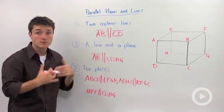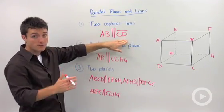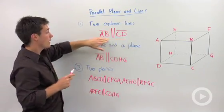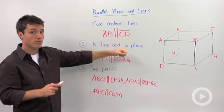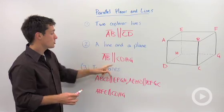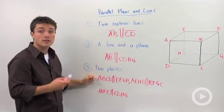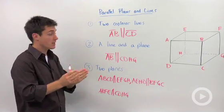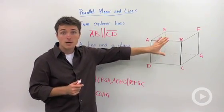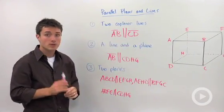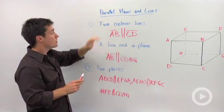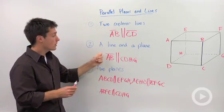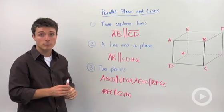So two coplanar lines, if we look at our cube, there's lots of them, but I only named one pair, and that was AB and CD. We said that we could have a line parallel to a plane. Again, there's many, and I just chose one. And we can say that two planes can be parallel if they never intersect. And because there's only three pairs, I decided to write them all out. So don't just think that parallelism applies only to two coplanar lines. It could also apply to a line and a plane, and two planes.